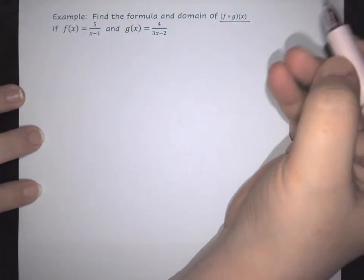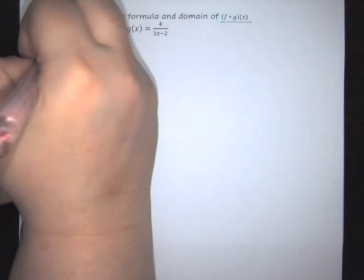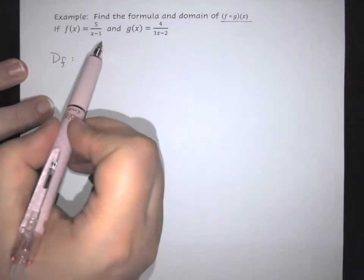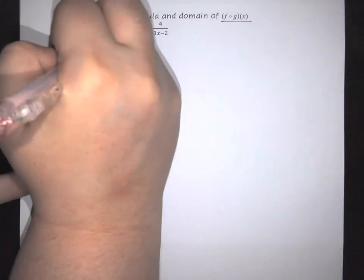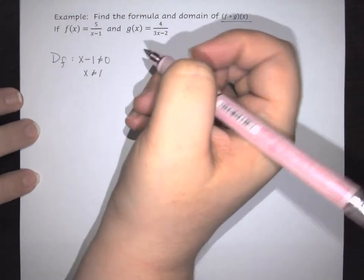So the first thing that you need to do is find the domain of each individual function. We're going to look at the domain for f, and in this case the domain for f is going to follow the rational rule which says you cannot have a zero in a denominator. So here we're going to have that x minus 1 can't be 0, so x can't be 1.